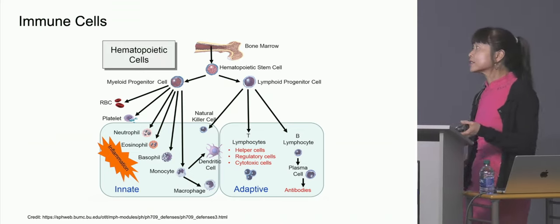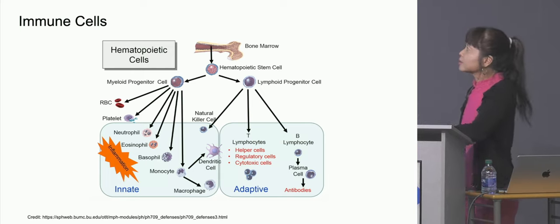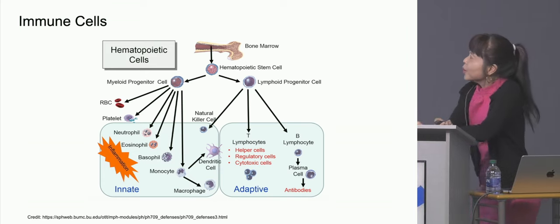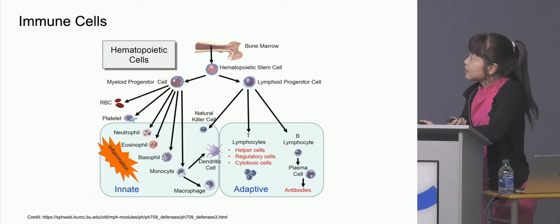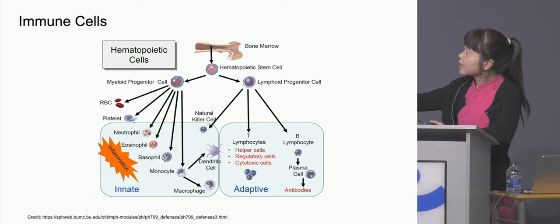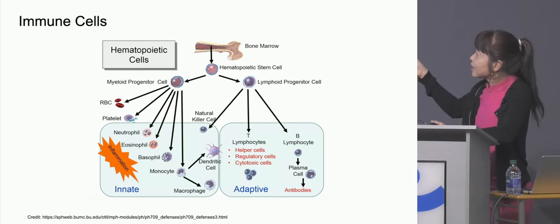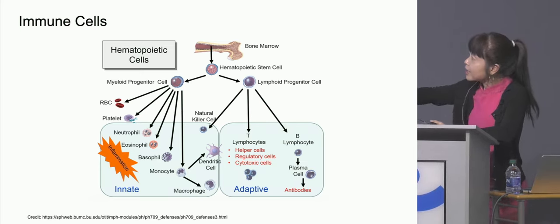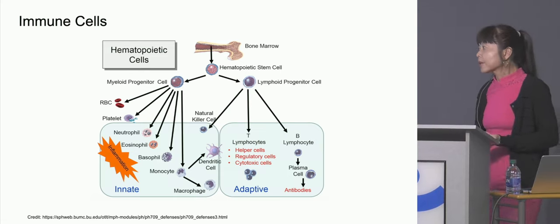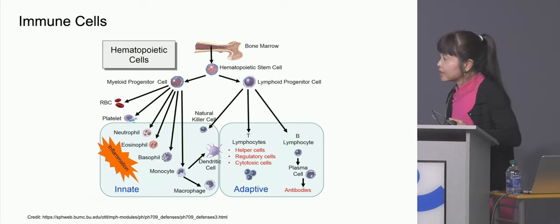So where do these fascinating cells come from? When I was in medical school, we were taught that they came from the bone marrow. You start with a stem cell called the hematopoietic stem cell, and it divides into two lines: the myeloid line and the lymphoid line. Eventually the myeloid line develops into what we call the innate system, and the lymphoid line develops into the adaptive system.